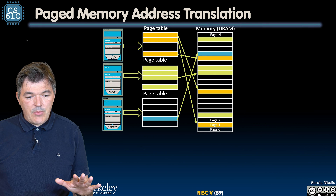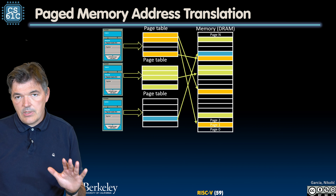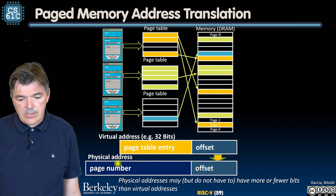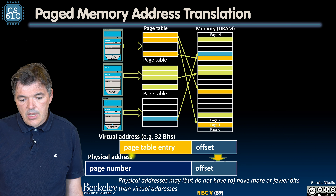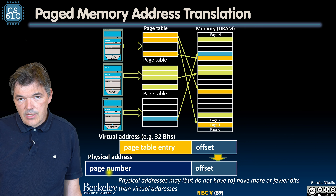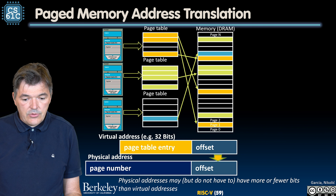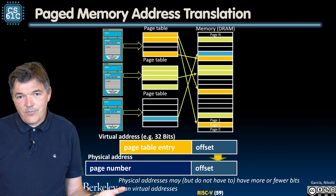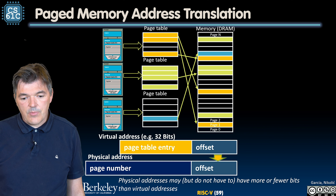The memory manager provides memory address translation from the virtual address space to the physical address space. This is done by retaining the offset — the offset stays untouched. The page table entry is used as a lookup to produce the actual physical address of the page. Note that physical addresses may have more or fewer bits than virtual addresses. For example, in one system virtual addresses are 48 bits while physical addresses are 39 bits.